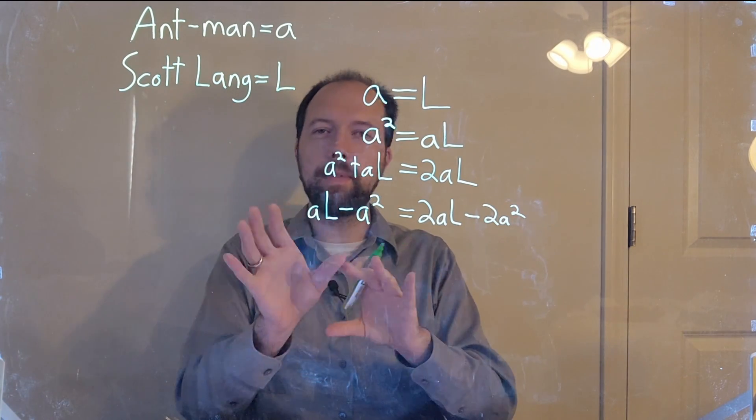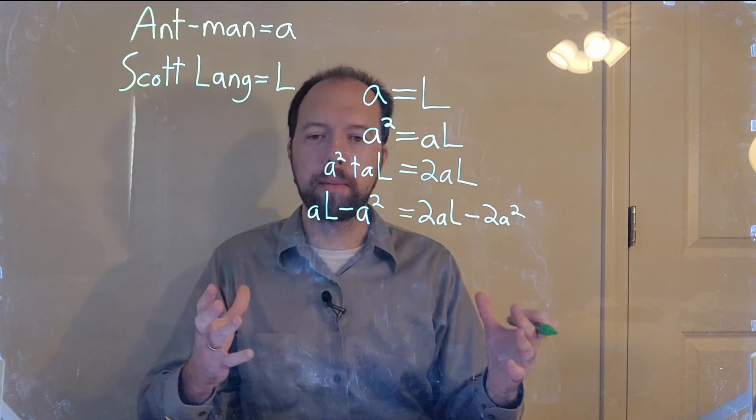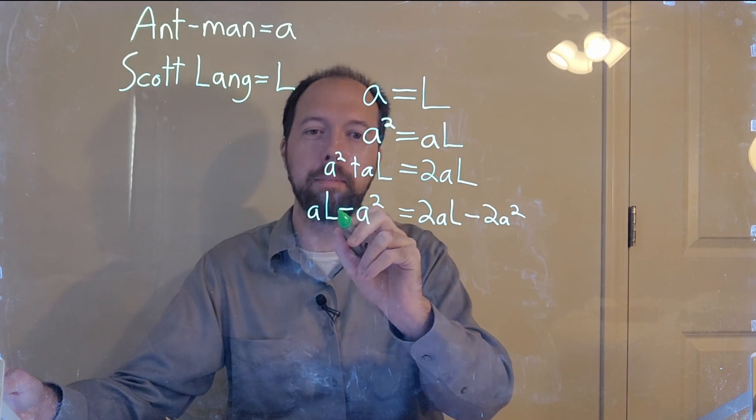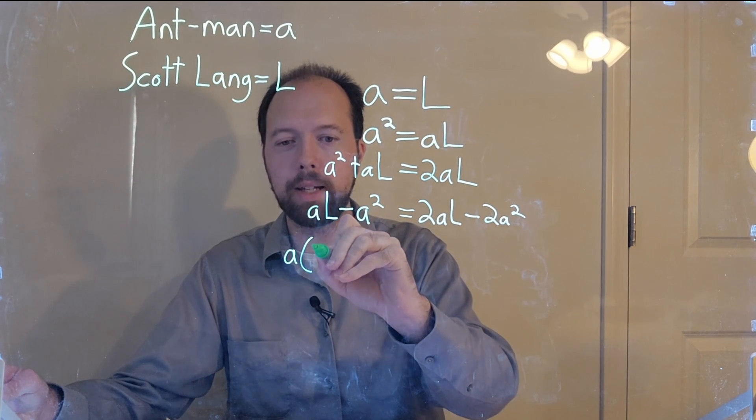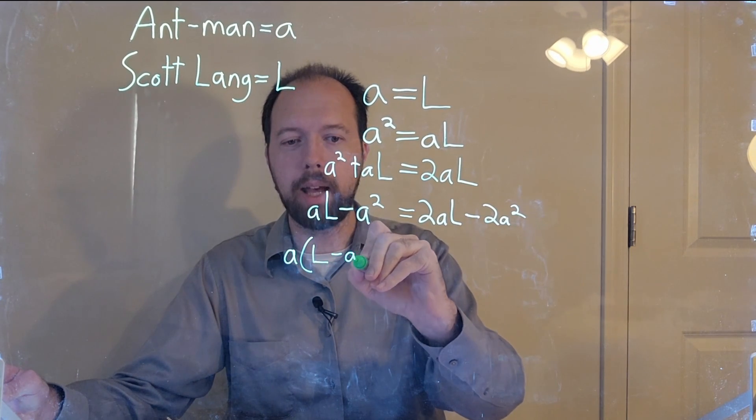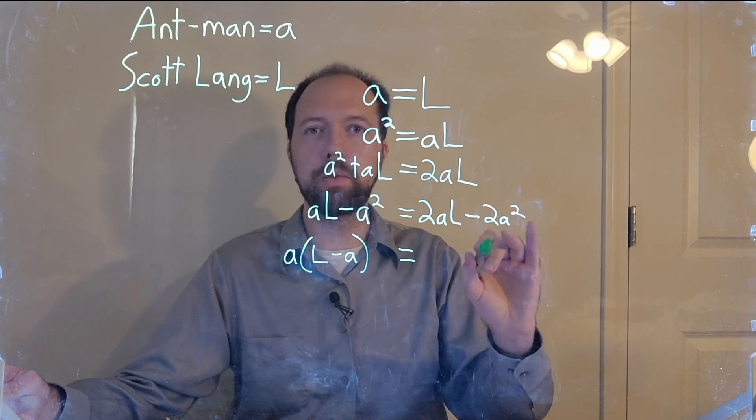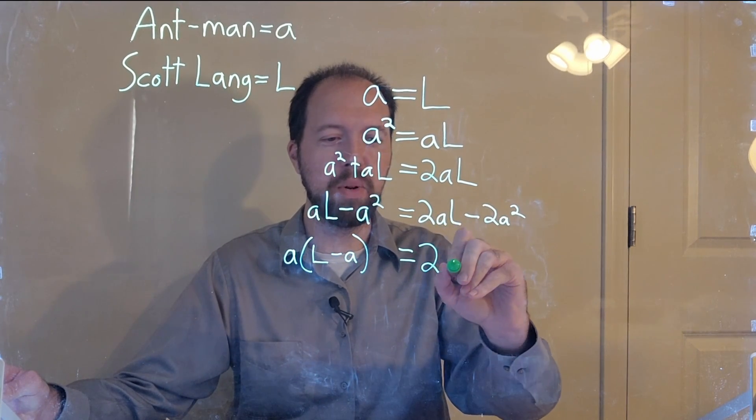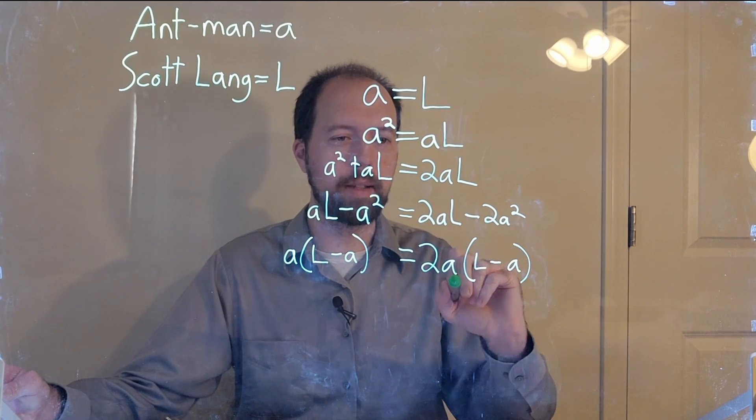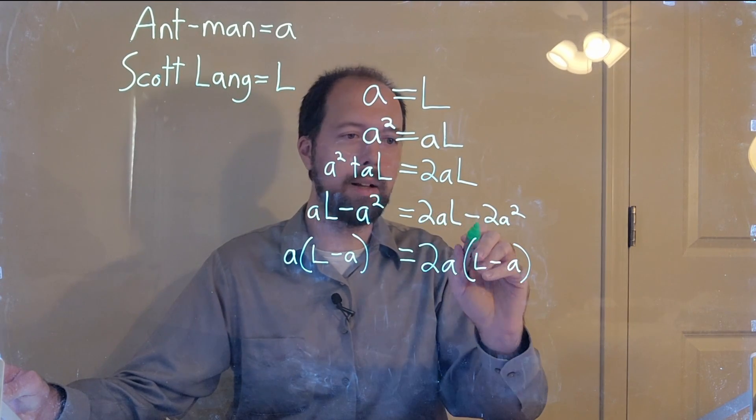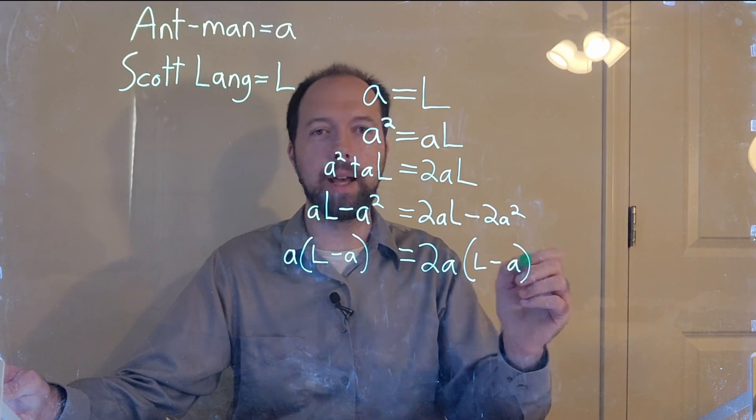So now we're going to simplify both sides of this. We're going to factor out the A's from both sides. So AL minus A squared, factor out an A, gives us A times L minus A on this side. And over here, we have 2A's we can factor out. So we have 2A times L minus A on this side.